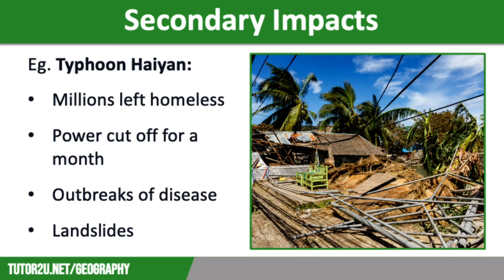Tropical storms can lead to thousands of people losing their homes and becoming homeless, needing to be put up in temporary accommodation. A loss of crops or fishing boats could result in a loss of income and would hit food supplies. Shops could be shut due to the loss of power and schools might have to close, disrupting education.